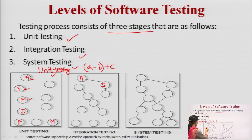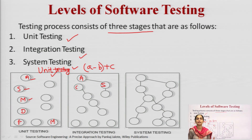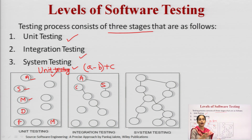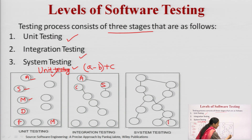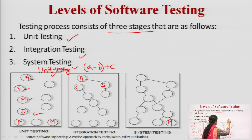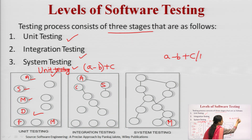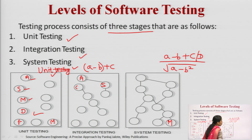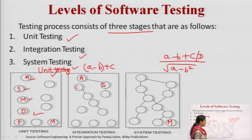That is integration testing — checking whether the separate modules, when they are being joined, give the correct result. Then, when they are called in the main program and I have to solve an equation — for example, (a minus b plus c) divided by d over the square root of (a minus b) minus b squared, or calculating the square root of b squared minus 4ac.